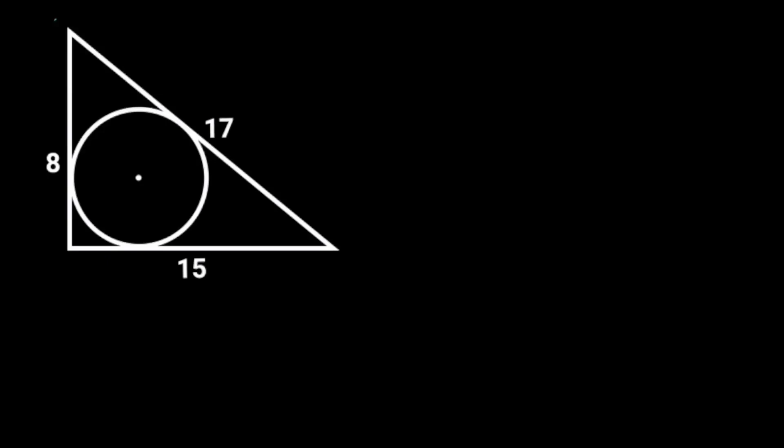This figure is a triangle with a circle inscribed in it. If the sides of the triangle are 8, 15, and 17 units, find the area of the circle. Note that this figure is not drawn to scale.